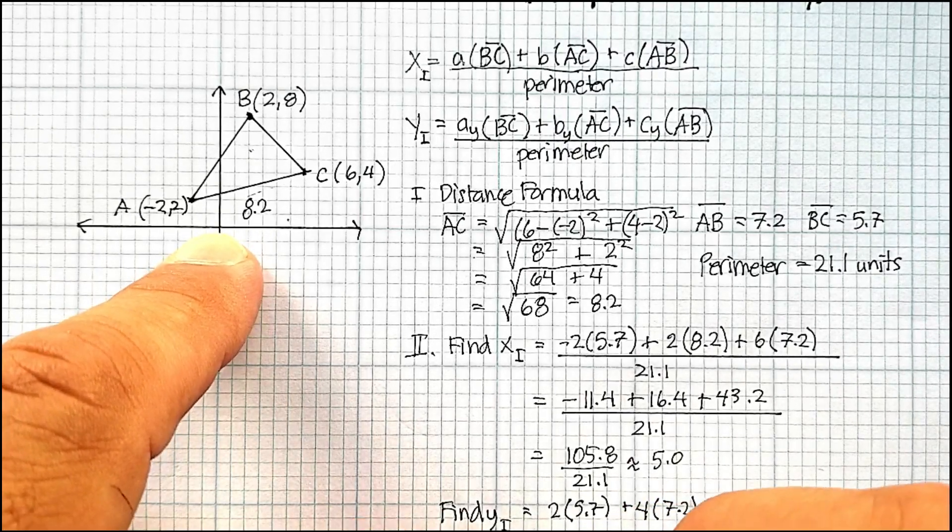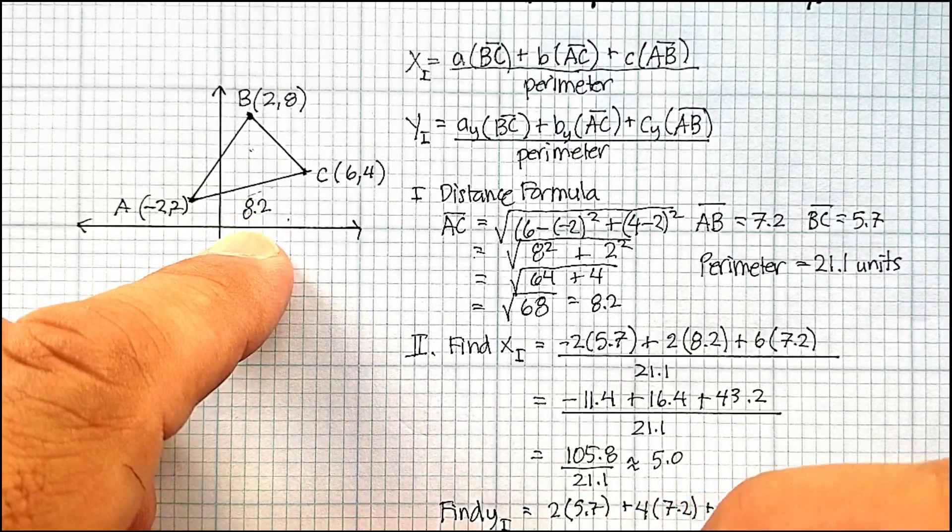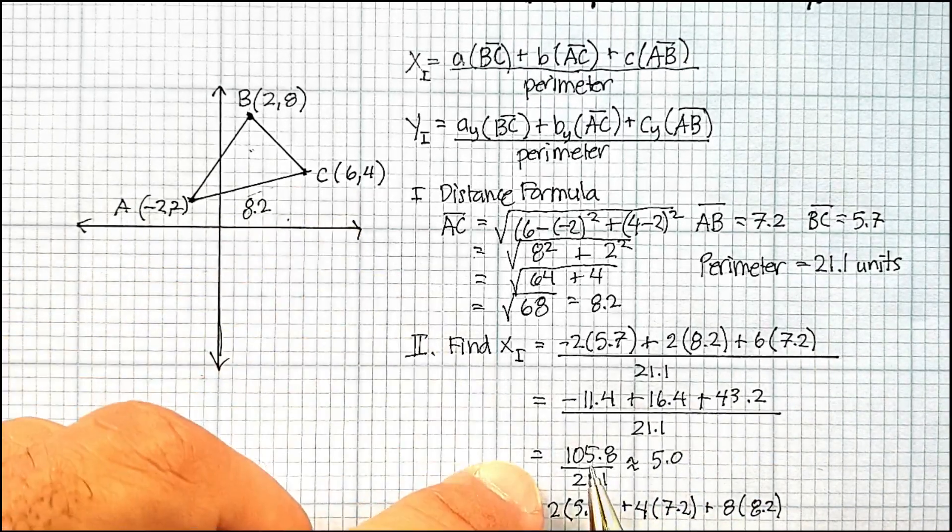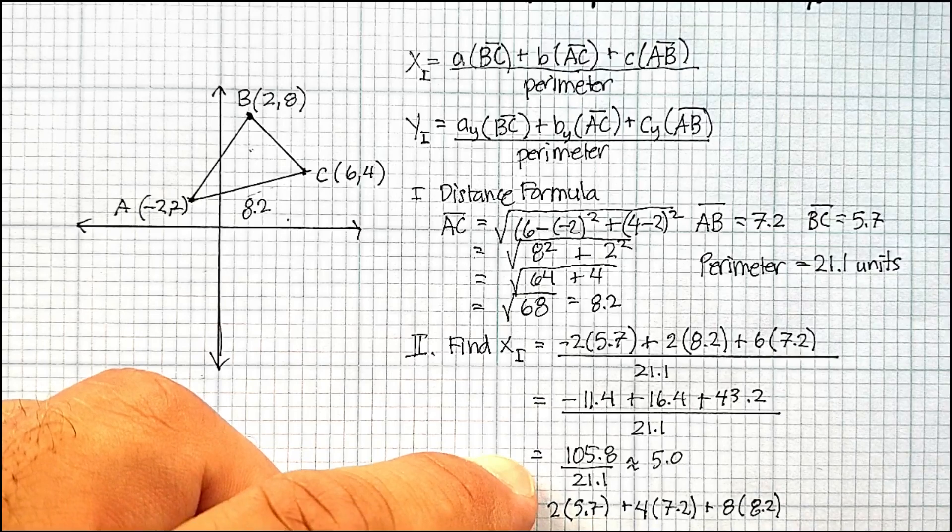That's going to turn out to be, oh, excuse me, I see what I did wrong. 105.8 over 21.8, that's the y value.